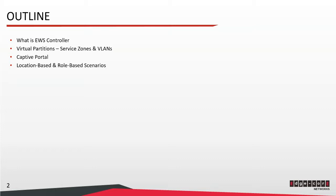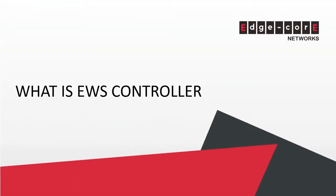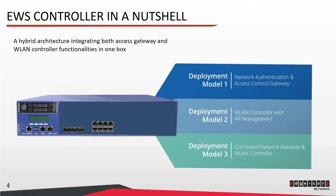We will show you how the controller can be deployed based on user locations or user roles. What is an EWS controller? In a nutshell, it is a hybrid architecture integrating both access gateway and WLAN controller functionalities in just one box. The controller can be flexibly deployed following one of three deployment models: as a network authentication and access control gateway, as a WLAN controller with AP management, or combined as both a network gateway and WLAN controller.